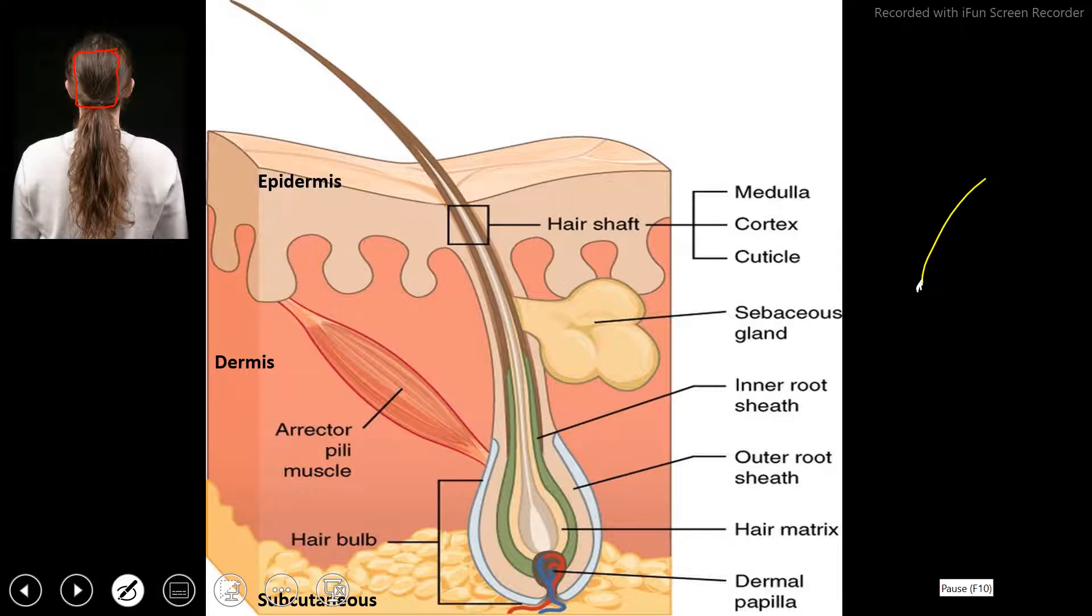Now let's start with the actual hair itself, the hair shaft. It's made up of the medulla, the cortex, and the cuticle.